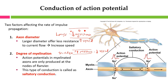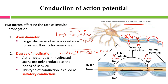The second factor is the degree of myelination. Action potentials in myelinated axons — those with a myelin sheath — are only produced at the nodes of Ranvier. In contrast, unmyelinated axons must generate action potentials continuously along the entire membrane. With the myelin sheath, voltage-gated channels are concentrated only at the nodes of Ranvier, producing action potentials only at these regions. This causes the action potential to leap or jump from one node of Ranvier to the next, which is called saltatory conduction.